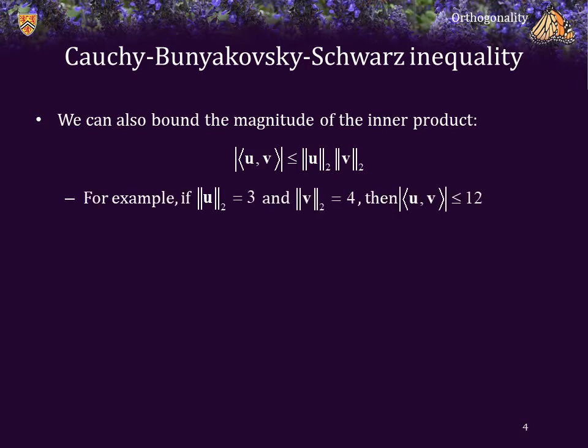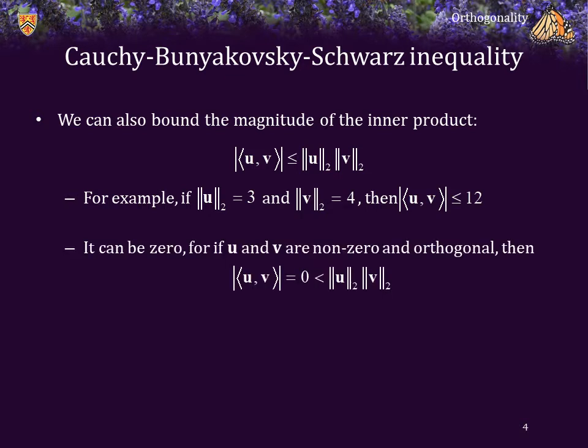For example, if we knew that the two-norm of u was three and the two-norm of v was four, then we are guaranteed that the absolute value of the inner product cannot exceed 12. It can be zero, for if u and v are non-zero vectors but they are nevertheless orthogonal, then the absolute value of their inner product is zero, and that's definitely less than this product.